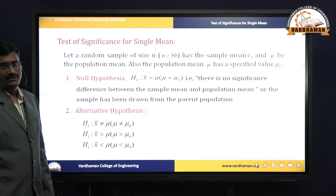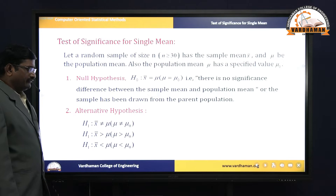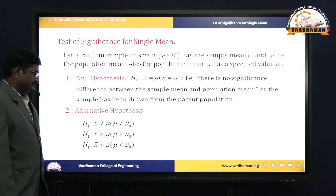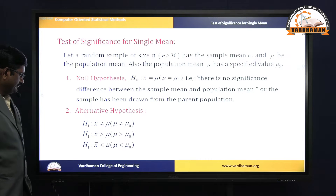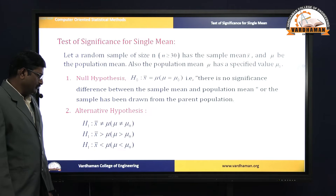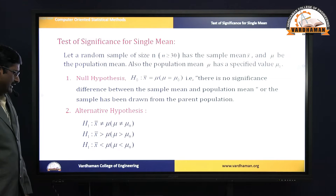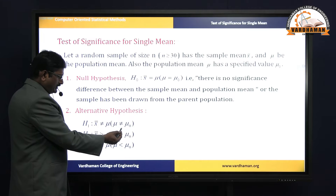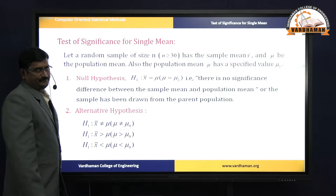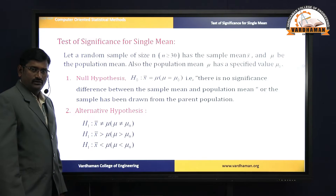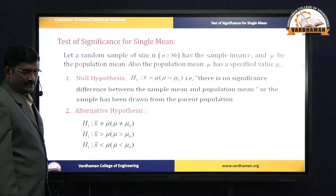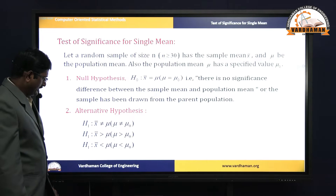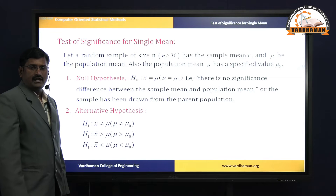The next working rule is alternative hypothesis. It can be denoted in three ways: H1: x-bar ≠ mu (or mu ≠ mu-naught), x-bar > mu (or mu > mu-naught), or x-bar < mu (or mu < mu-naught). If mu ≠ mu-naught, we consider a two-tailed test. If mu > mu-naught, it is a right-tailed test. If mu < mu-naught, it is a left-tailed test.